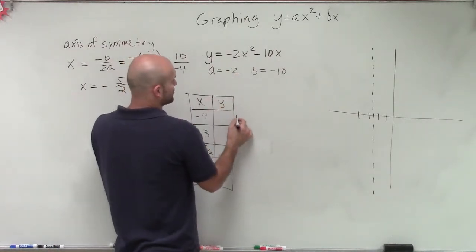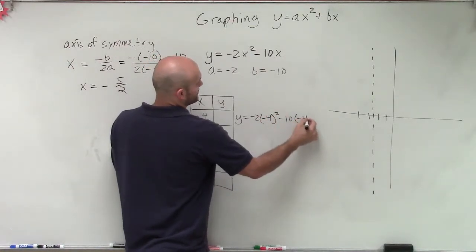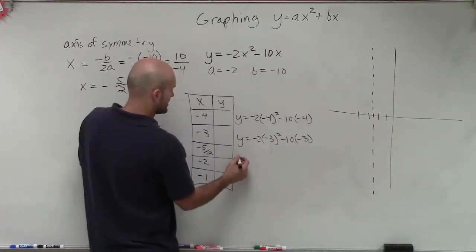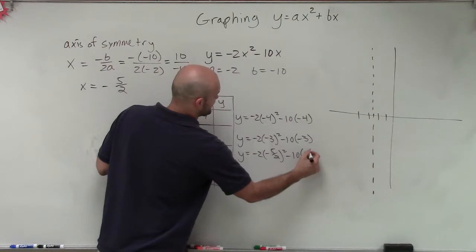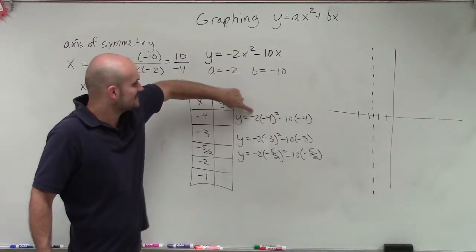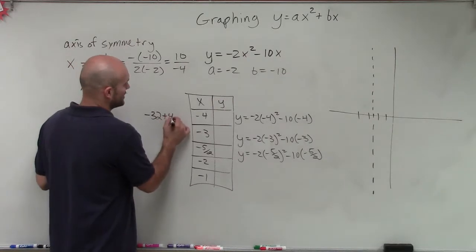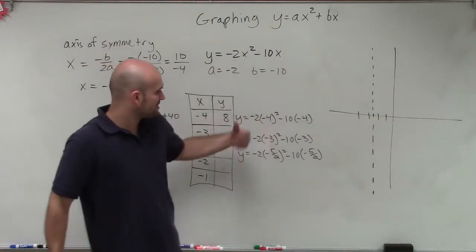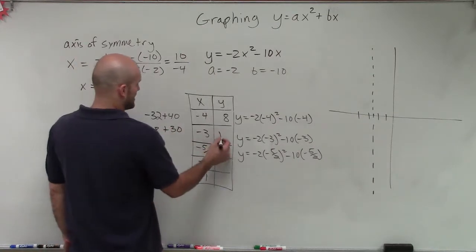We do need to find our vertex. Let's find our value for x equals negative 4: y equals negative 2 times negative 4 squared minus 10 times negative 4. Negative 4 squared is 16; 16 times negative 2 is negative 32; negative 10 times negative 4 is positive 40. So that gives us positive 8. Now for x equals negative 3: negative 3 squared is positive 9; 9 times negative 2 is negative 18; negative 10 times negative 3 is positive 30. Negative 18 plus 30 gives us positive 12.